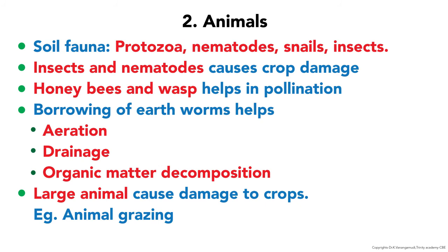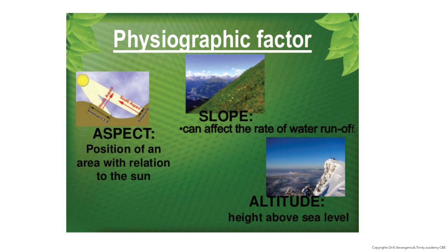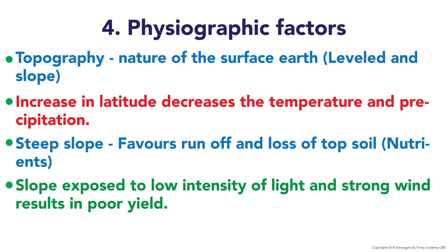The physiographic factors are of three types: slope, altitude, and aspect. Slope prevents runoff of precipitation and rainfall. Altitude is the height above sea level. Aspect is the position of an area in relation to the sun. Topography is the nature of the earth's surface, whether leveled or sloped. As latitude and altitude increase, there is a drop in temperature and precipitation. Steep slopes favor runoff and loss of topsoil, especially nutrients. Slopes exposed to low light intensity and strong wind result in poor yield.